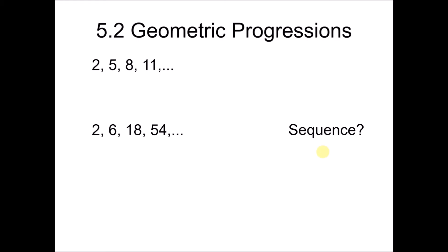Before that, we try to look at two given series of numbers here: 2, 5, 8, 11 and 2, 6, 18, 54. For the first series, we consider this as a sequence because of the pattern of adding 3 — meaning that 2 plus 3 gives 5, 5 plus 3 gives 8, 8 plus 3 gives 11, and so on.